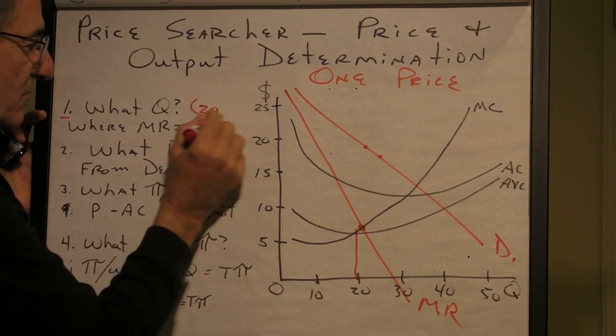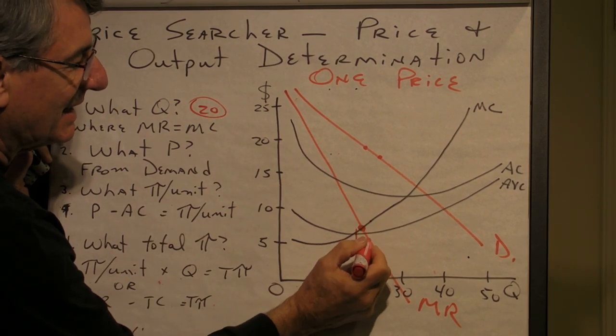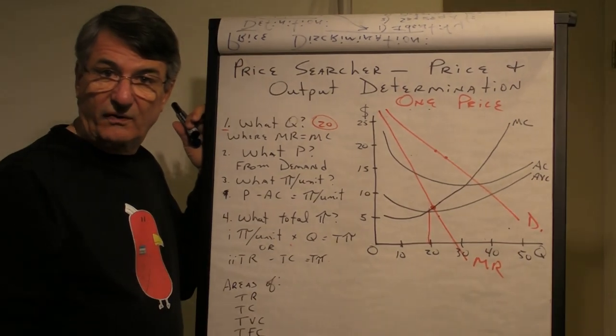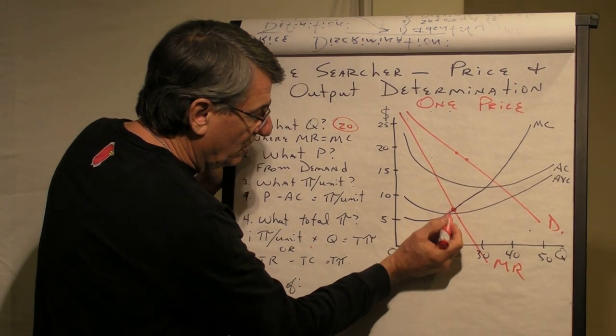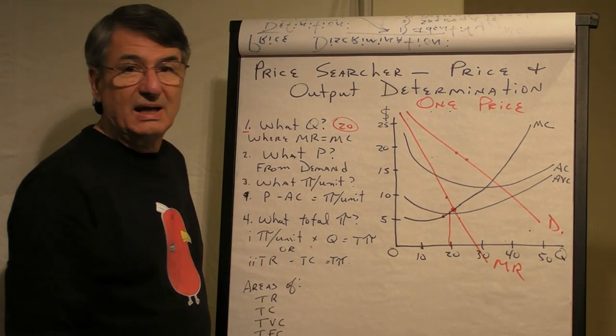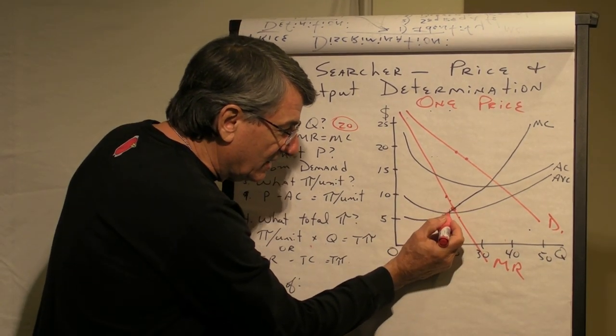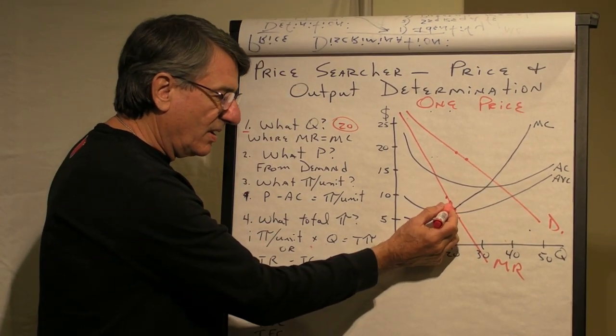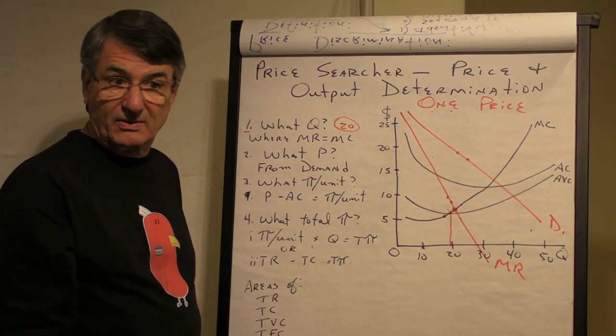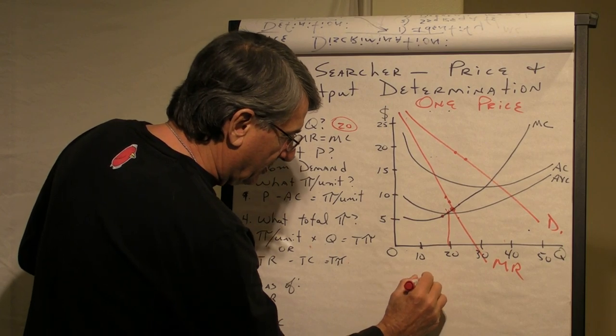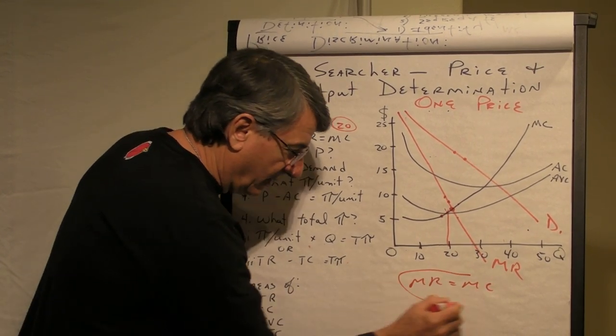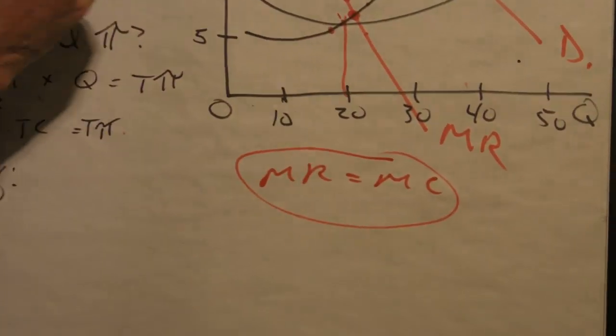Why wouldn't they want to produce one more? Because the next unit adds more to their costs than it does to their revenues, their total profit would fall. Why wouldn't they do fewer than 20 units? And the answer is that any units fewer than 20, on the subsequent units, they will add more to the revenue than to the costs, and their total profit would go up. So, profit is maximized where marginal revenue equals marginal cost. It's an important point here. All right, so that's the first question.